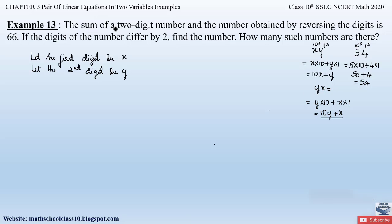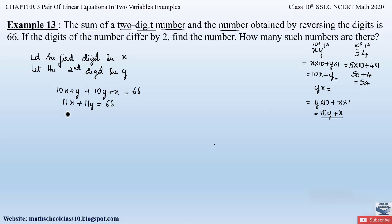The sum of the two-digit number and the number obtained by reversing the digits equals 66, so: (10x + y) + (10y + x) = 66. This simplifies to 11x + 11y = 66. Taking 11 as common, we get x + y = 66 ÷ 11 = 6. So x + y = 6 is equation 1.